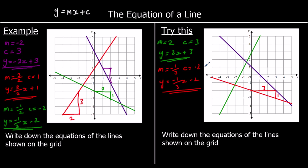And the purple line: for every one it goes across, it goes down one — a gradient of negative one. Its y-intercept is one. So its equation is y equals minus one x, which we just write as minus x plus one.